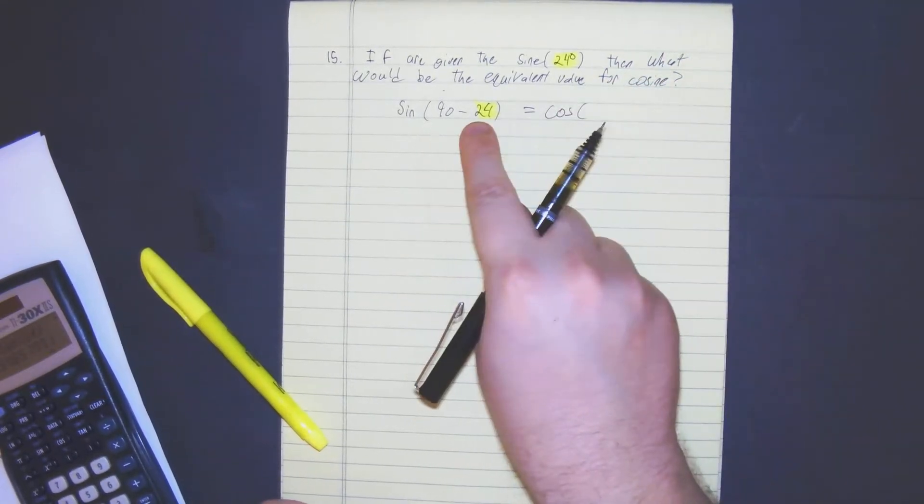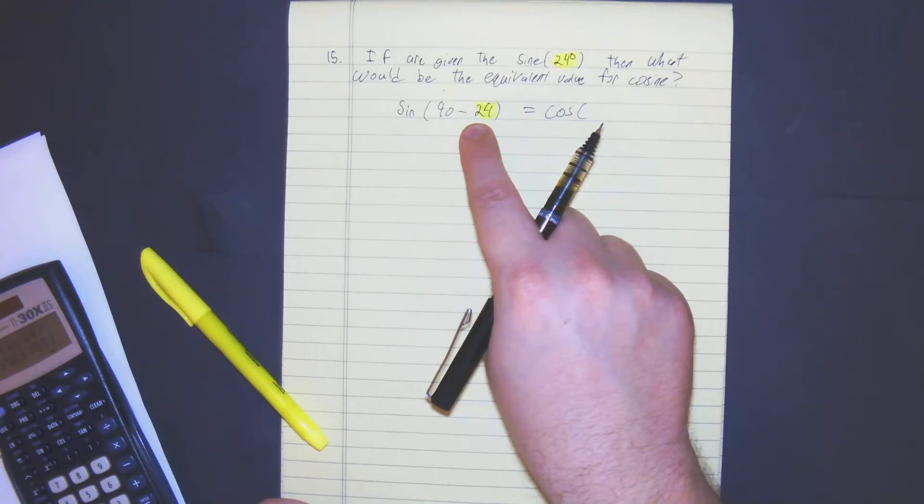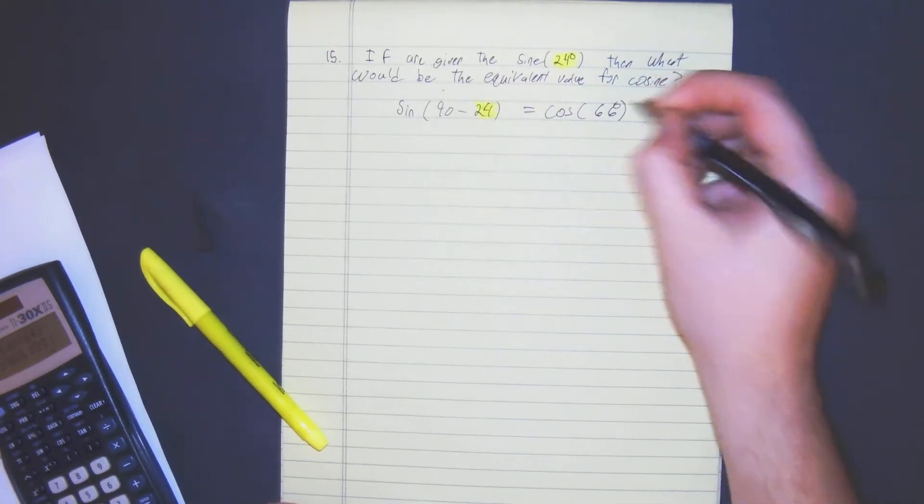So 90 minus 24, so 90 minus 20 would be 70, 70 minus 4 would be 66, so the cosine of 66 degrees.